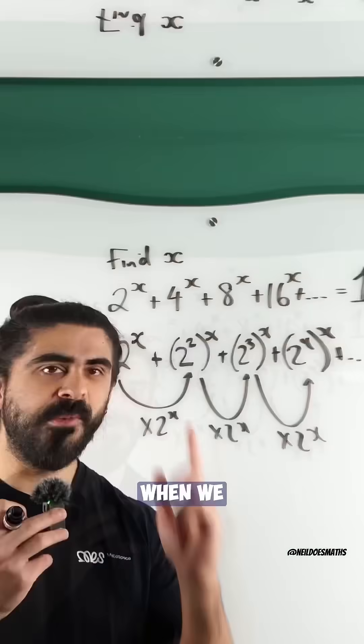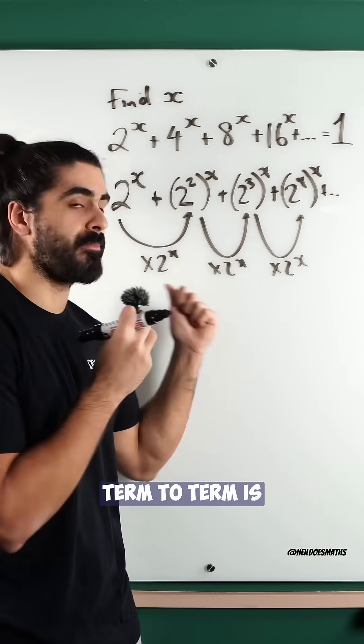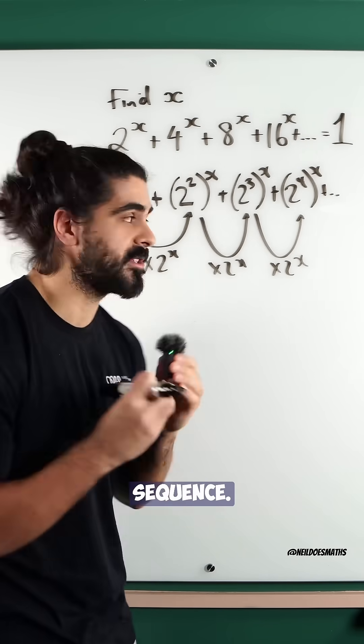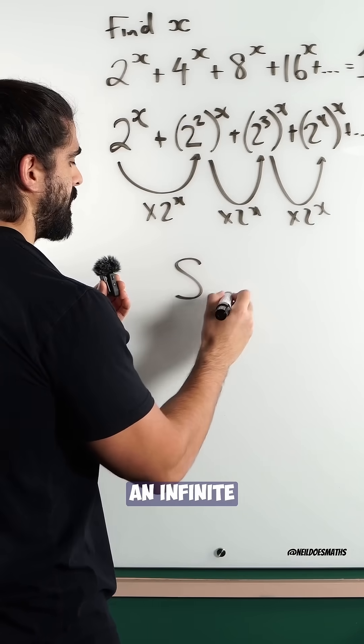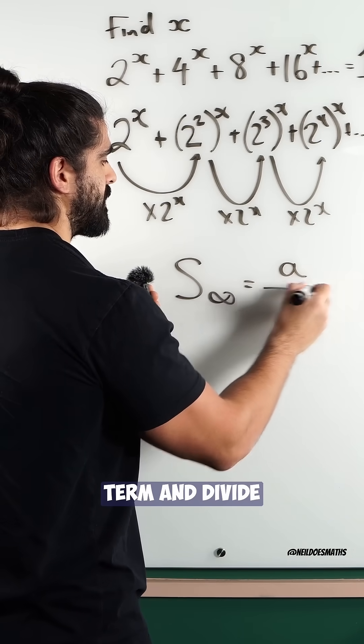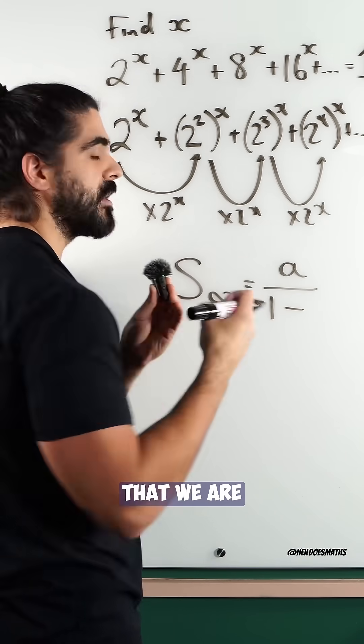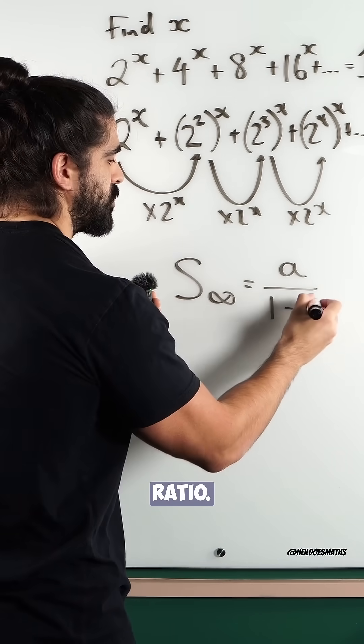When we sum the terms in a sequence, whereby going from term to term is multiplication, we call that a geometric sequence. And to sum an infinite number of terms, we take the first term and divide it by 1 minus the term that we are multiplying by. We call that the common ratio.